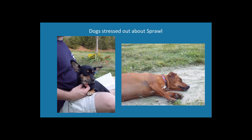In memoriam to my two dogs that are no longer with me — Dietler and Schnitzel. At this point they were very stressed out about sprawl, just taking a break from worrying about it. They were very good doggies. I have a new dog now named Mabel — she's a little crazy, but a good dog too. I hope you enjoyed and learned a little bit about sprawl. Thanks.